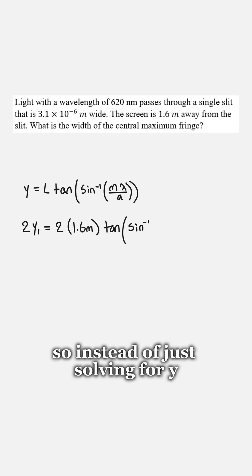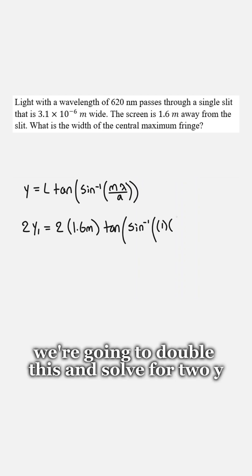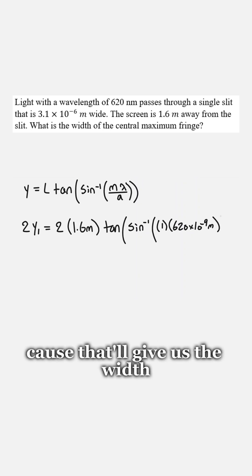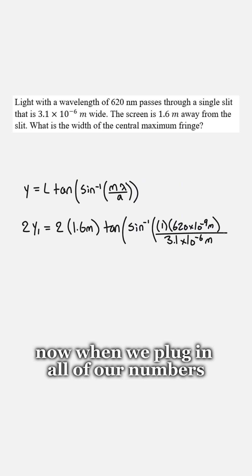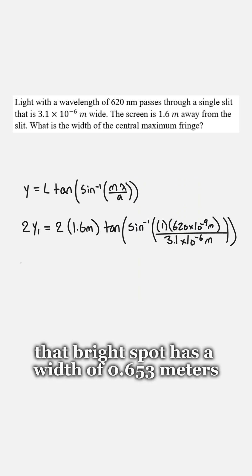So instead of just solving for y we're gonna double this and solve for 2y, and we're gonna solve for y1 because that'll give us the width of the central bright spot. Now when we plug in all of our numbers we get that that bright spot has a width of 0.653 meters.